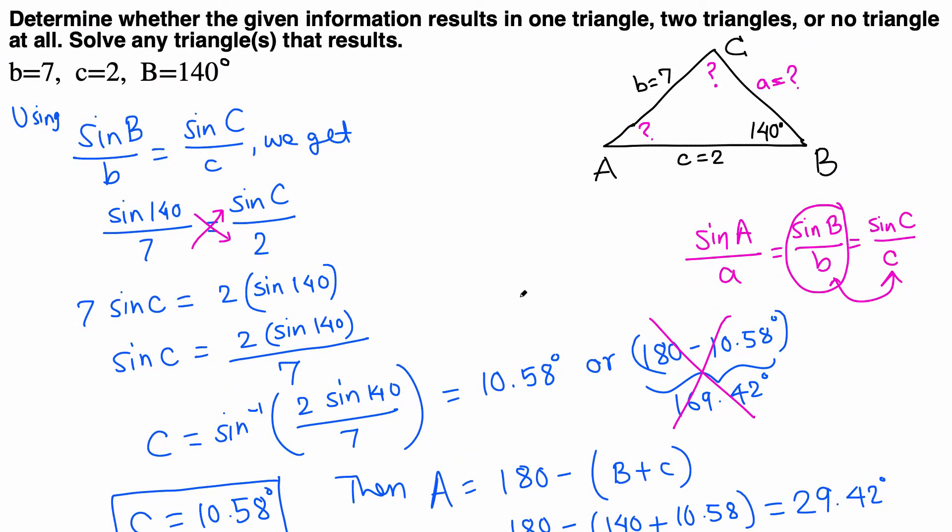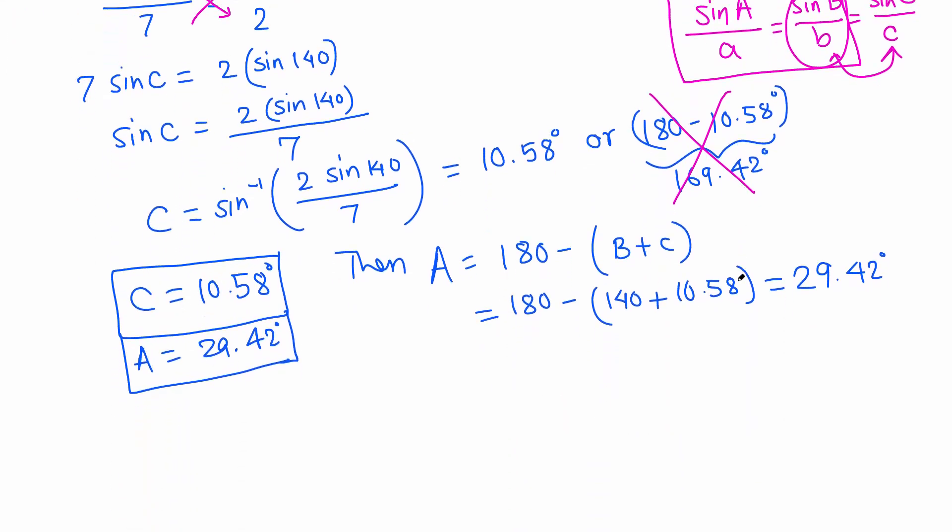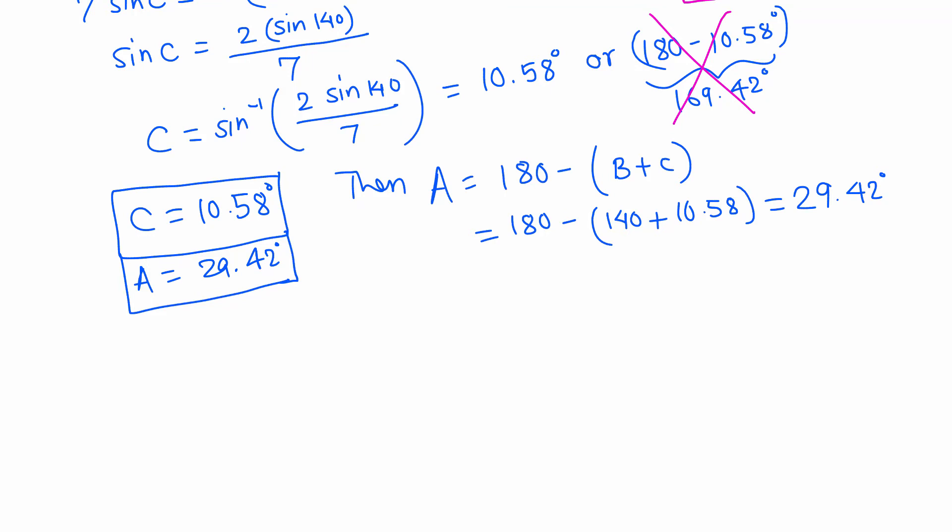Now what is left to find? A is found, angle C is found. Now side a—to find side a, we can go back to law of sine and use any two. Maybe the first two, because angle B is known, side b is known, angle A is known, and only side a is unknown. From this relation we can find side a.